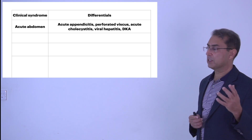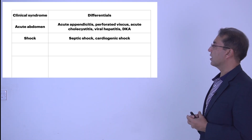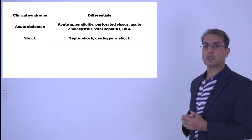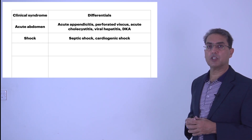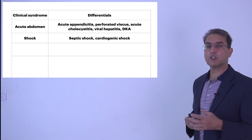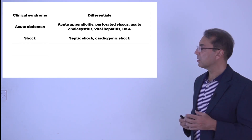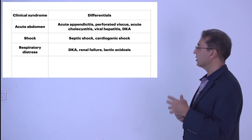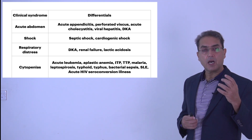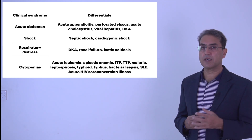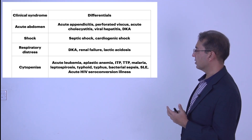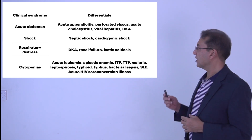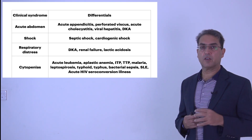If the patient presents with shock, the main differential is septicemic shock, but cardiogenic shock must also be considered — some dengue patients develop carditis causing shock, and in older patients myocardial infarction must be excluded. If the patient presents with respiratory distress, consider diabetic ketoacidosis, renal failure, or lactic acidosis. If the patient presents with cytopenias, consider acute leukemias, aplastic anemia, ITP, TTP, malaria, leptospirosis, typhoid fever, typhus, bacterial sepsis, systemic lupus erythematosus, and acute HIV seroconversion.